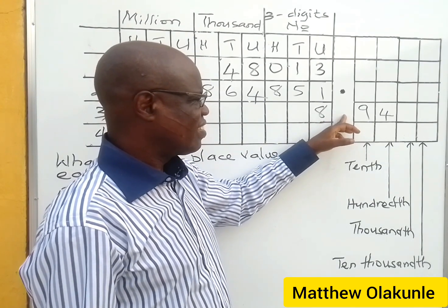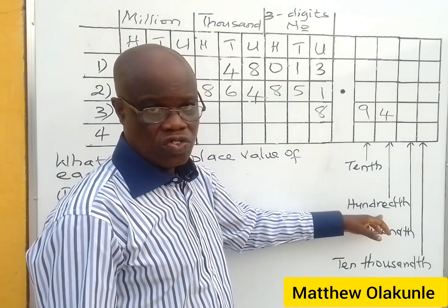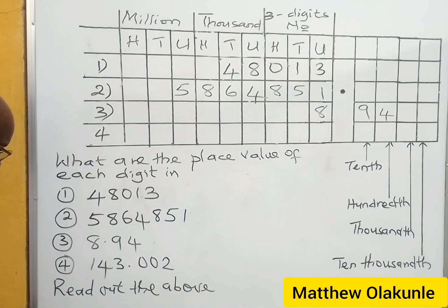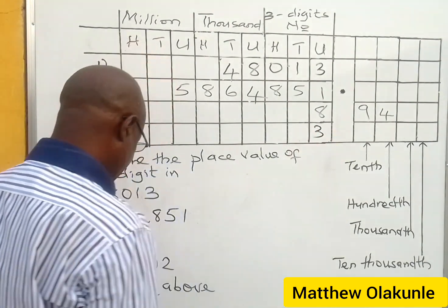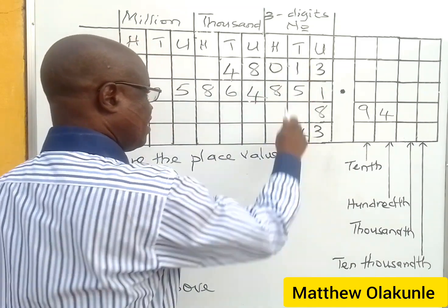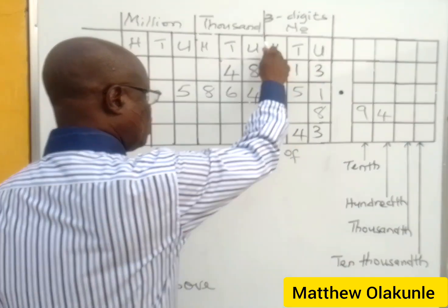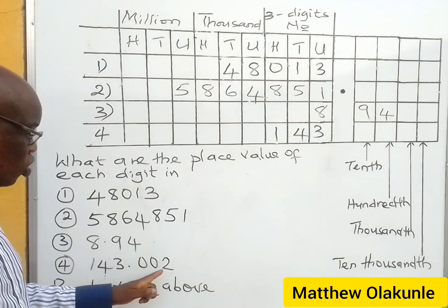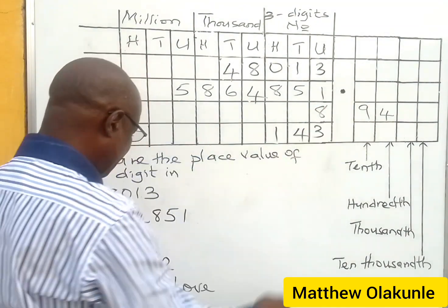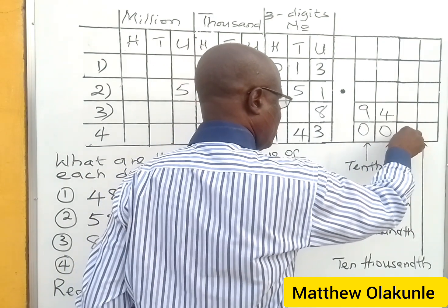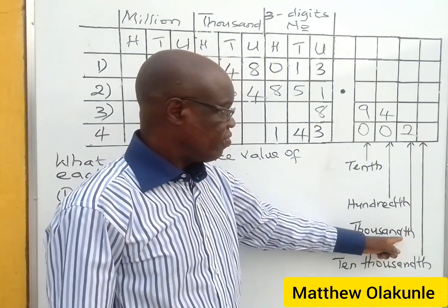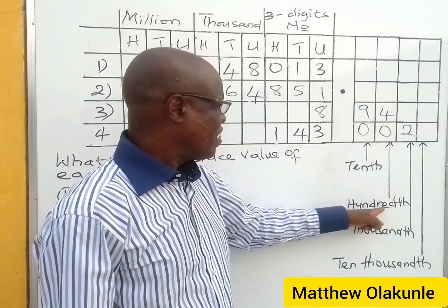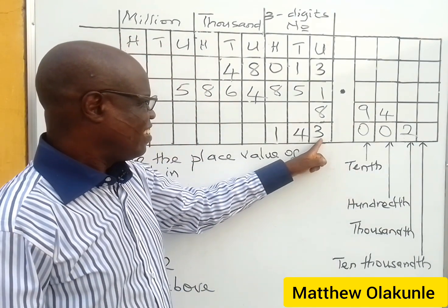To read out this number: eight and nine-tenths and four-hundredths. As simple as ABC. Now the last one also has a whole number part and a decimal part. Starting from the whole number, you have three which is units, then four which is tens, then one which is hundreds. Then you go to the decimal part — the fractional part. After the decimal point you have: zero-tenths, zero-hundredths, and two-thousandths.